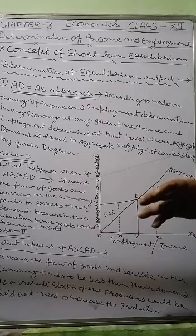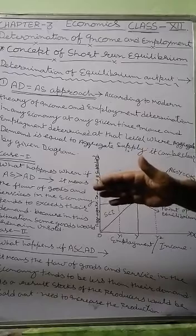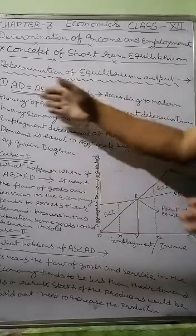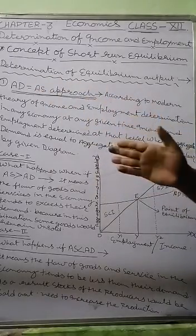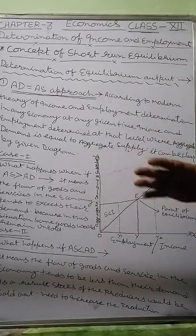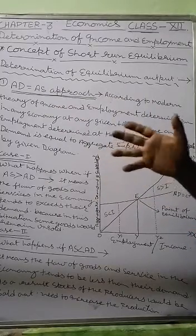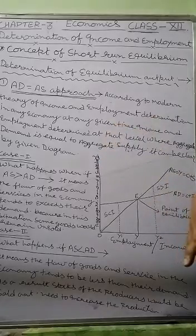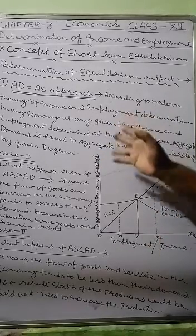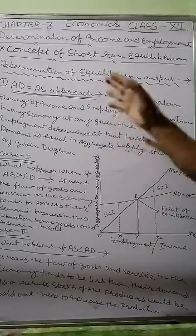In the previous video, we stated that there are two types of equilibrium approaches in Short-run: the aggregate demand and aggregate supply approach, and the saving-investment approach. Both are derived from aggregate demand and aggregate supply theory. So, in this video, we are first going to describe the AD-AS approach.